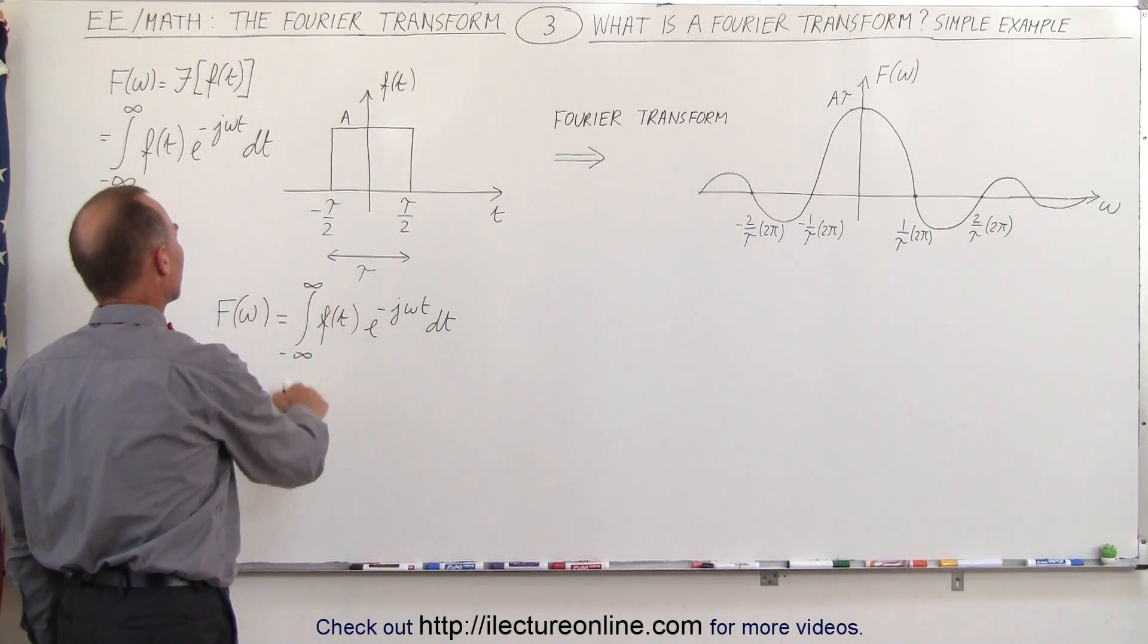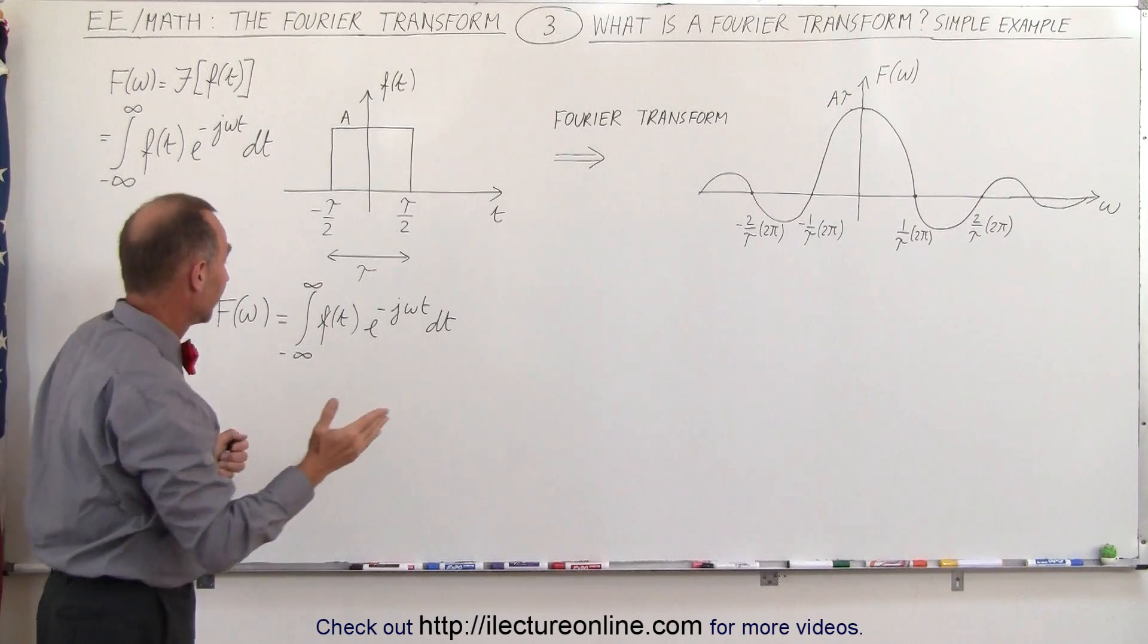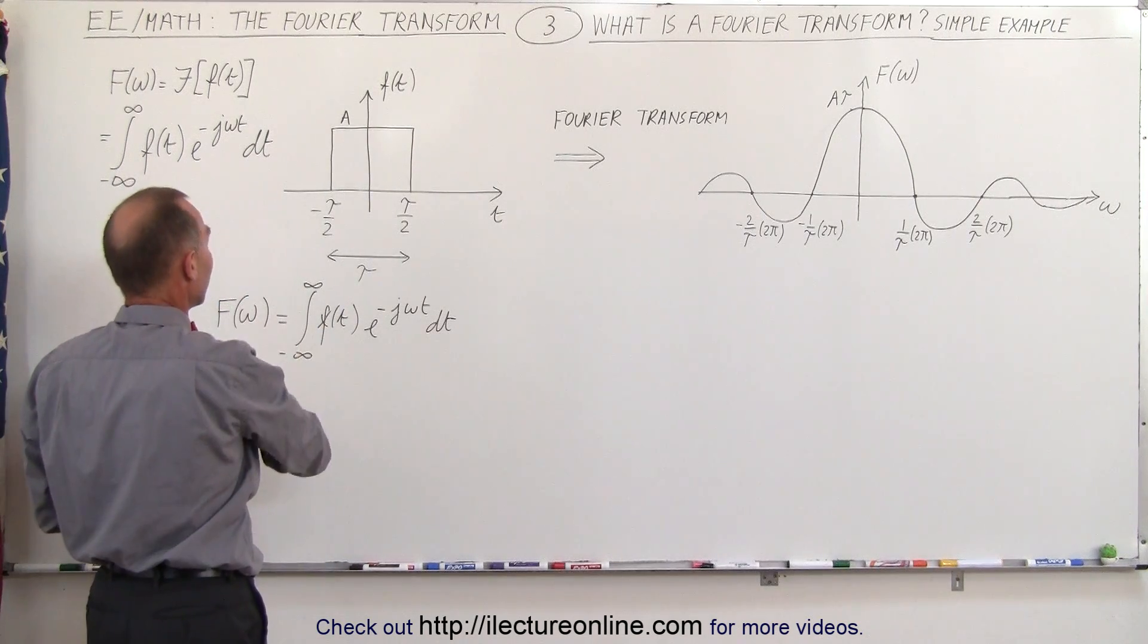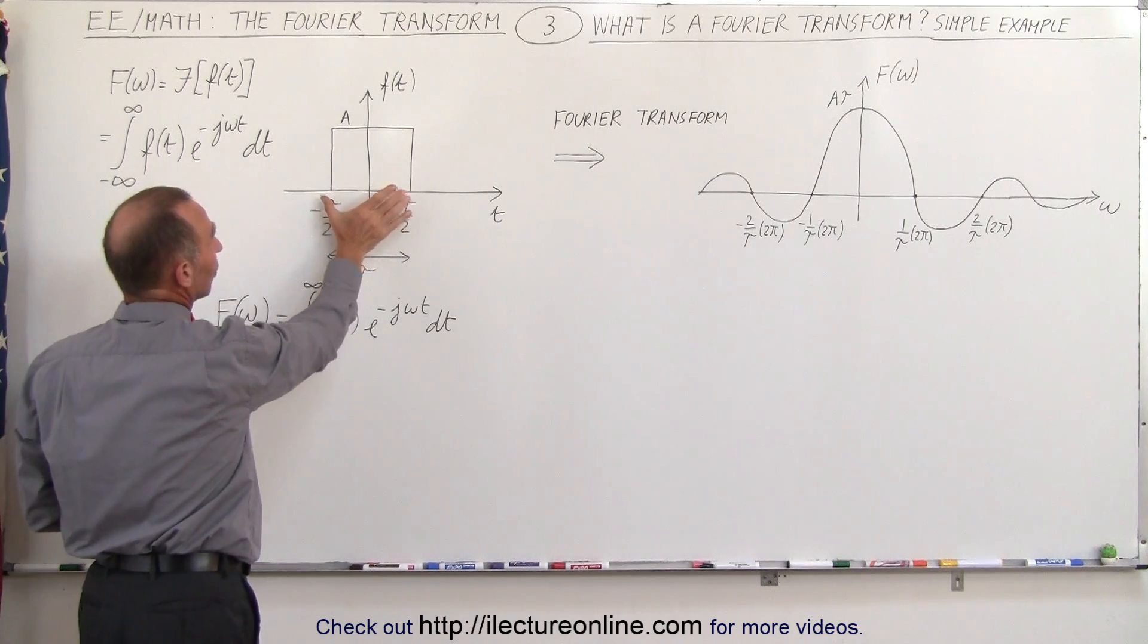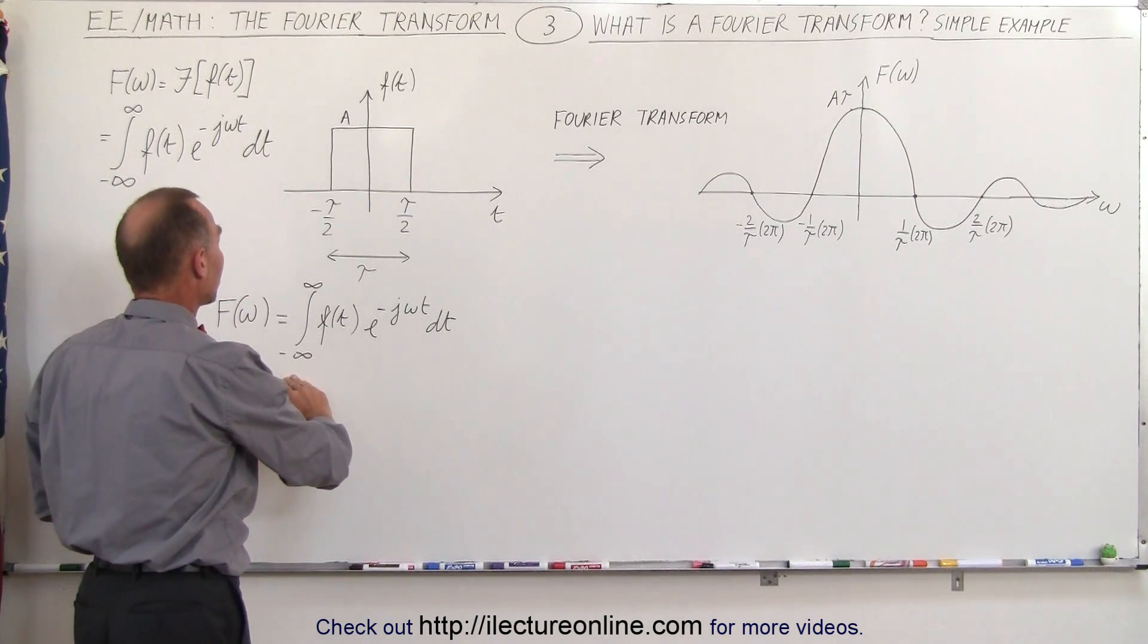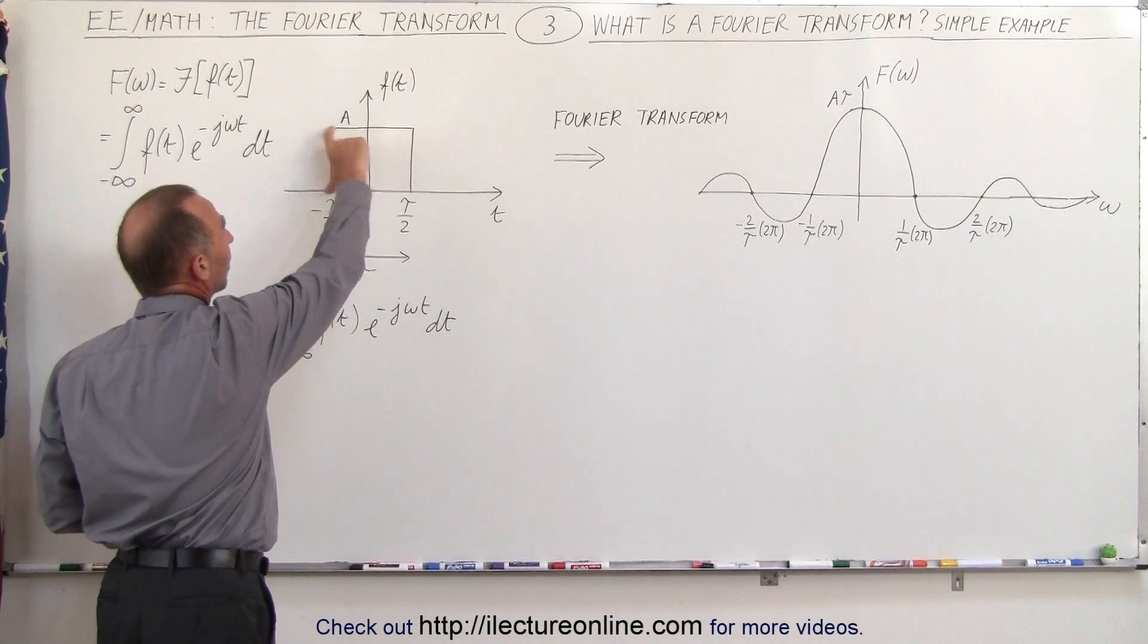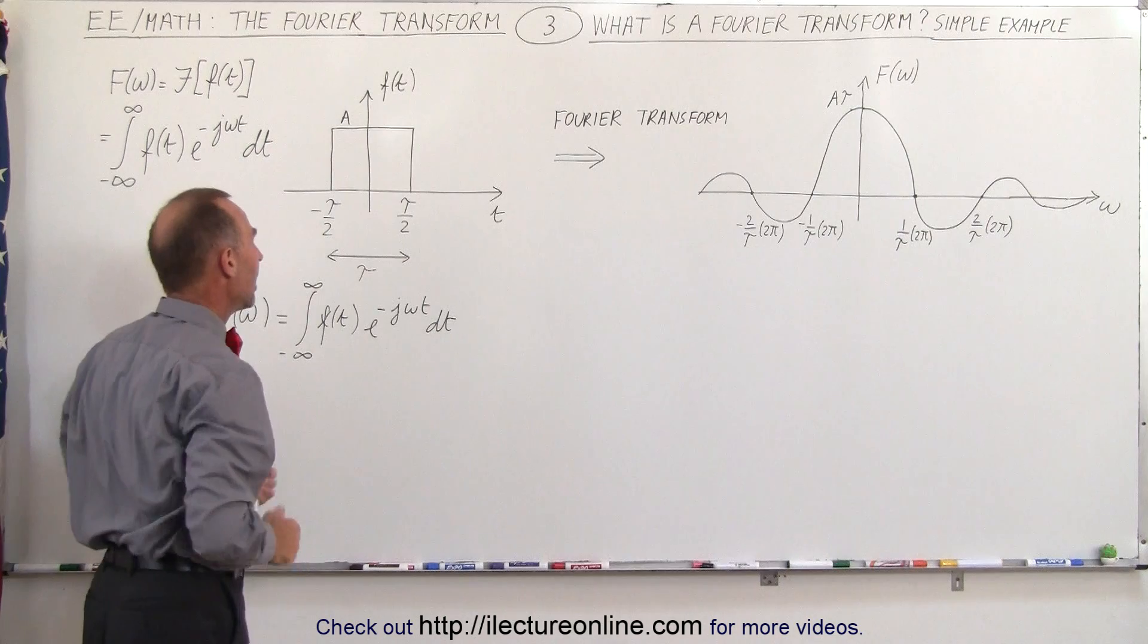So when you look at the limits here and you look at your input function you realize that you don't have to really integrate from minus infinity to infinity because the function is only this wide. So basically it comes down to integrating from minus tau over 2 to plus tau over 2 and the function here is a simple constant amplitude equal to A.